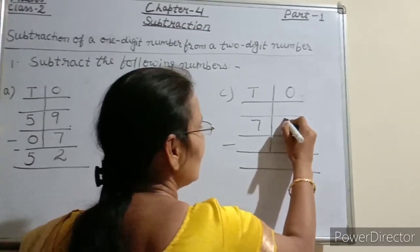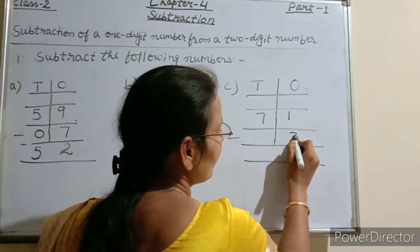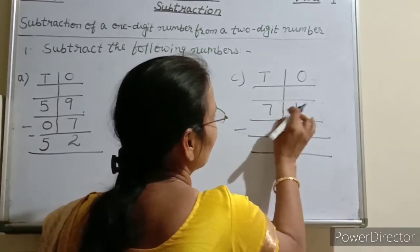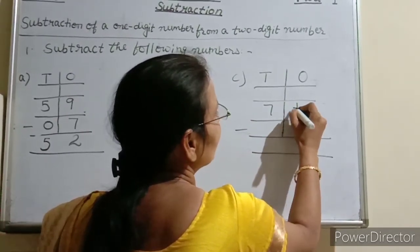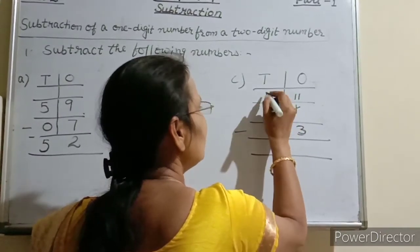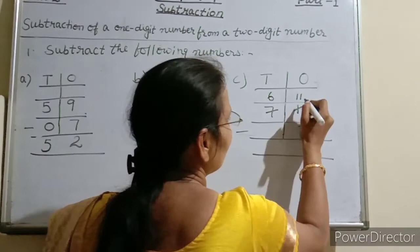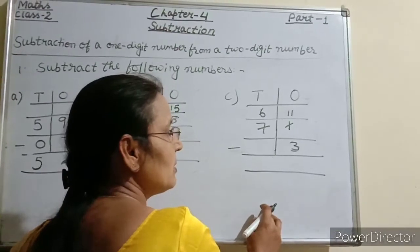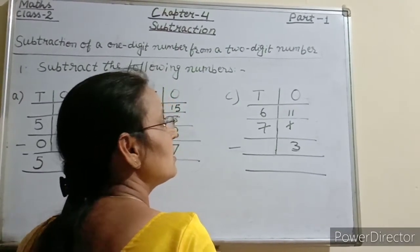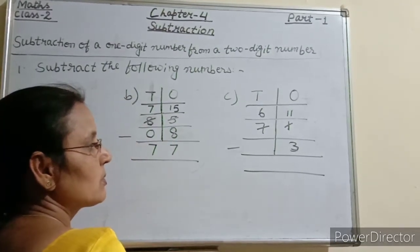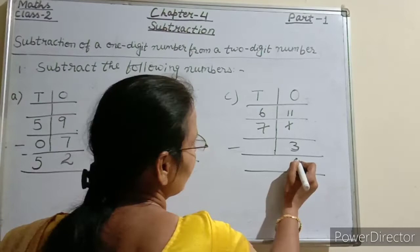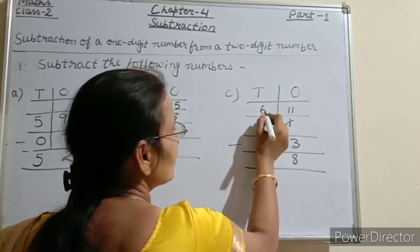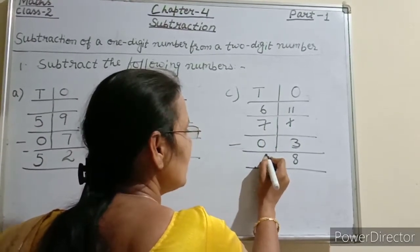Next problem: 1 minus 3 is not possible, so we borrow from the tens place. 1 becomes 11 and 7 becomes 6. At the ones place, 11 minus 3 equals 8. At the tens place, 6 minus 0 equals 6. So the answer is 68.